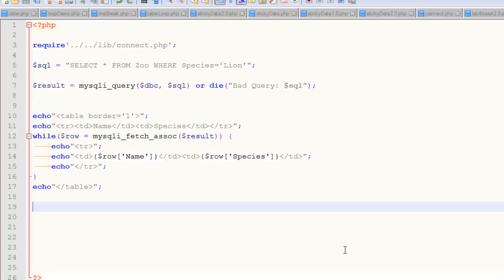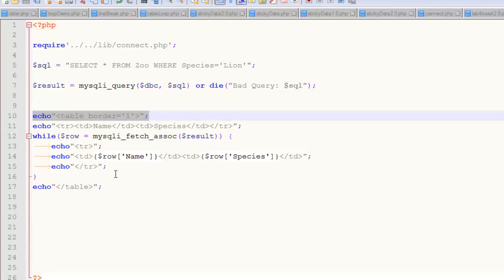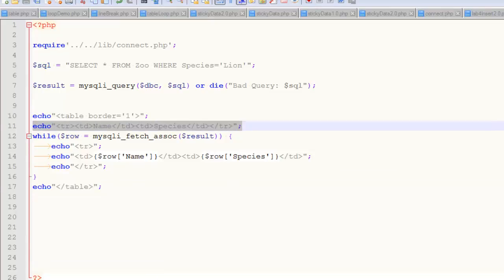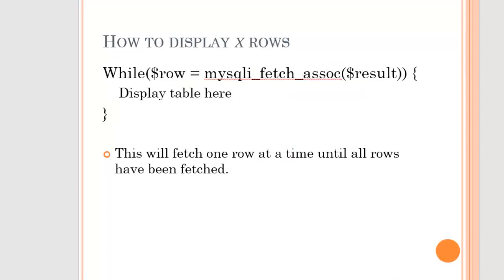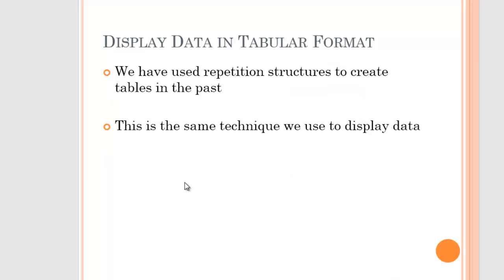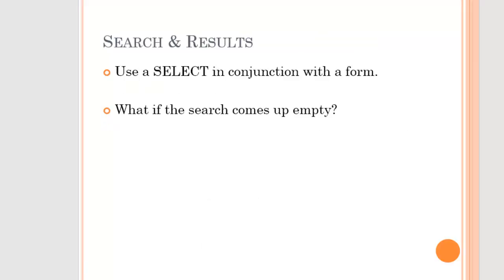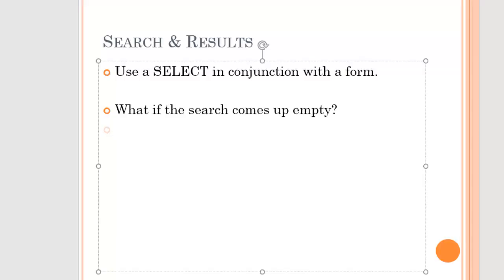We've used repetition structures in the past to create tables, so it's kind of just that same thing. The last thing we'll talk about is search results — and also what if the search comes up empty. I'm going to pause and add a little bit to the example, then we'll come back to it and explain the closing example for the week.